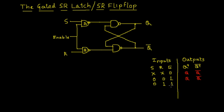Now we consider the next set of inputs: S=0, R=1, and Enable=1. 0 NAND 1 results in 1, and 1 NAND 1 results in 0. Irrespective of the second input to the lower NAND gate, the output is 1. This 1 in turn acts as another input to the upper NAND gate, and 1 NAND 1 results in 0. Therefore the output is 0 and 1, which I'll write onto the truth table.